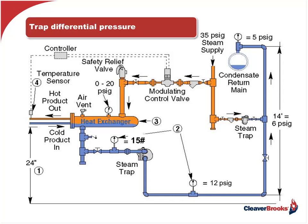Let's start by referring to the drawing on the screen where you are recovering condensate from a shell and tube heater. I have about 15 pounds at the trap inlet and require approximately 12 pounds to overcome the vertical lift and the pressure in my condensate return line. There's six pounds of vertical lift, some resistance in the pipe, and five pounds of condensate return — 11 pounds total. So I've got to have at least 12 pounds to overcome that static head and get my condensate into the condensate return line.